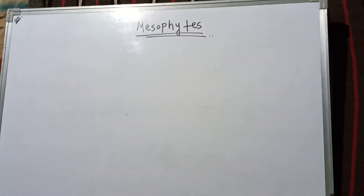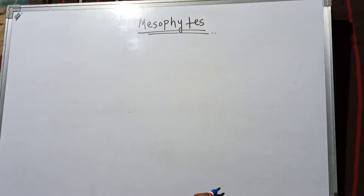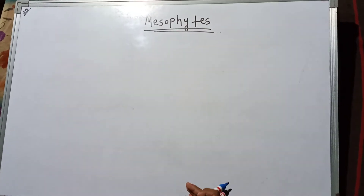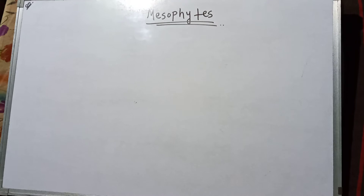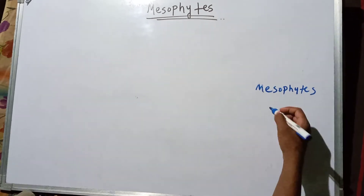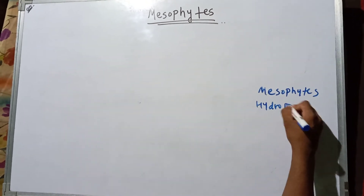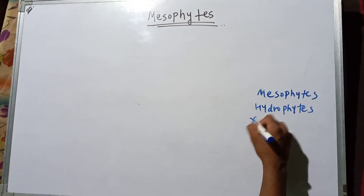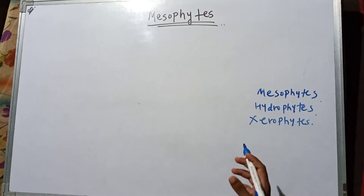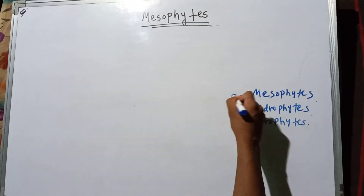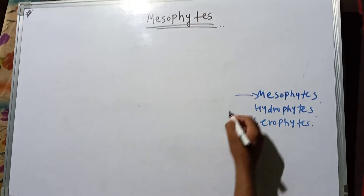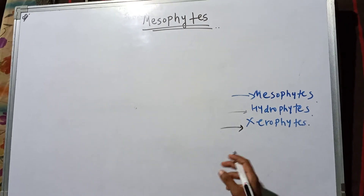Depending upon the water requirement, or more specifically upon the quantity of water available in their habitats, the three ecologically distinct groups of plants are mesophytes, hydrophytes, and xerophytes. Mesophytes are plants growing in neither very dry nor very wet habitats; hydrophytes are plants growing in or near water; and xerophytes are plants growing in very dry habitats.